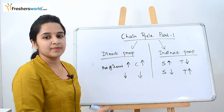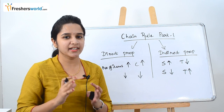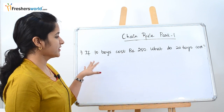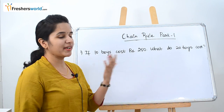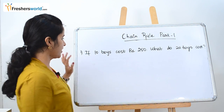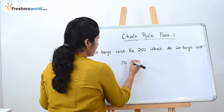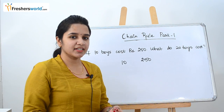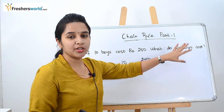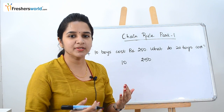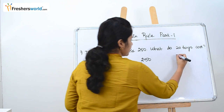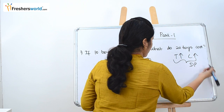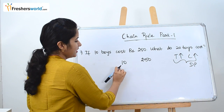If the speed is very low, the time consumed to reach that place will increase. This is indirect proportion. Now let's solve a couple of sums to understand direct and indirect proportions better. The first question is: if 10 toys cost 250 rupees, what do 20 toys cost? Initially 10 toys cost 250 rupees, and they are asking for 20 toys.